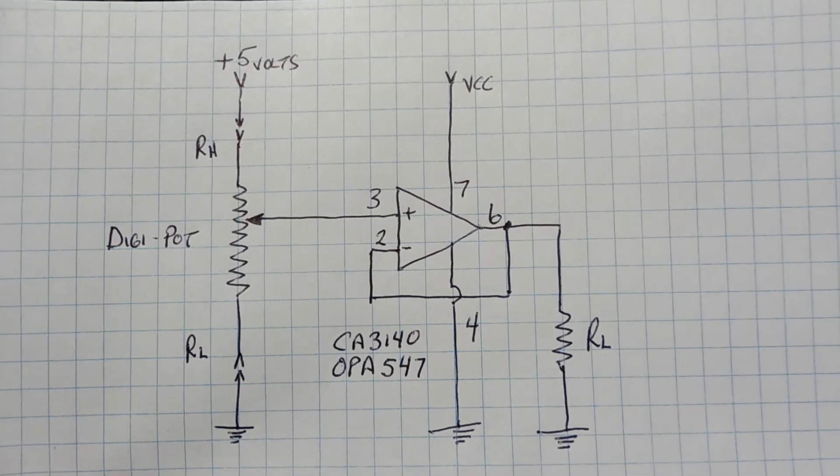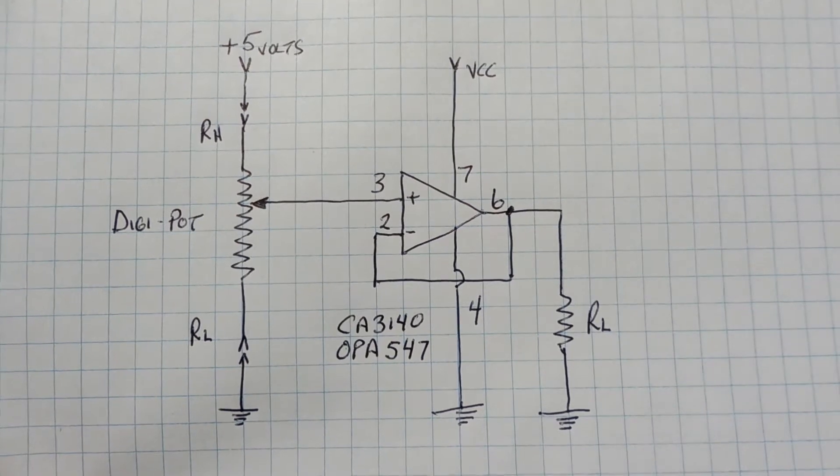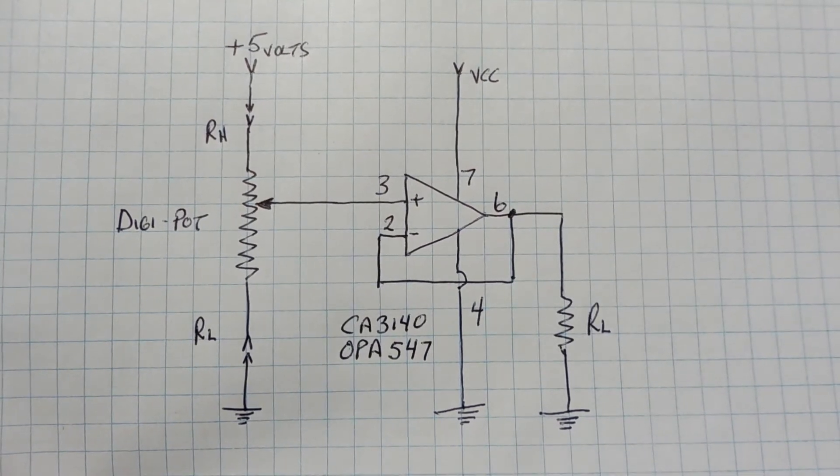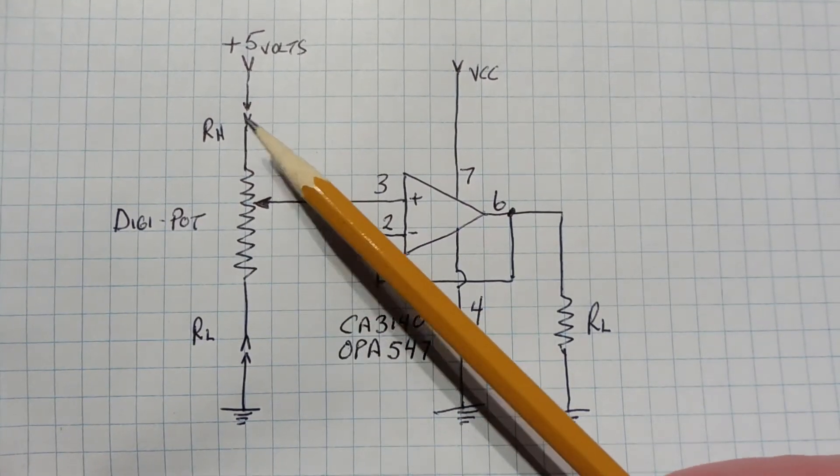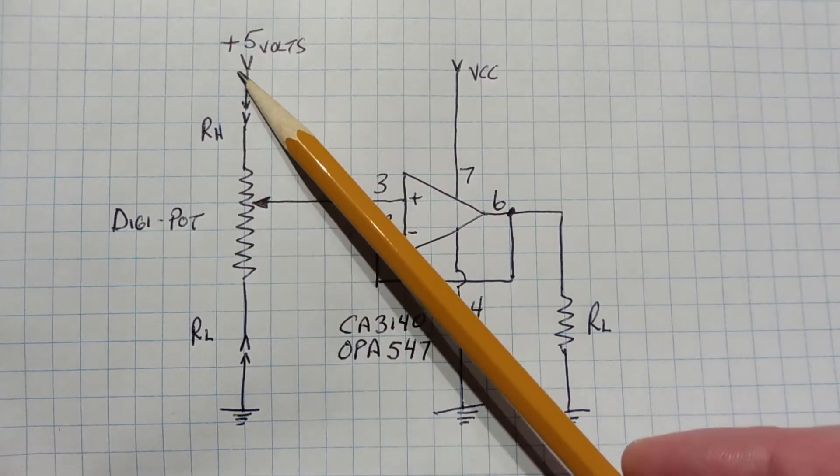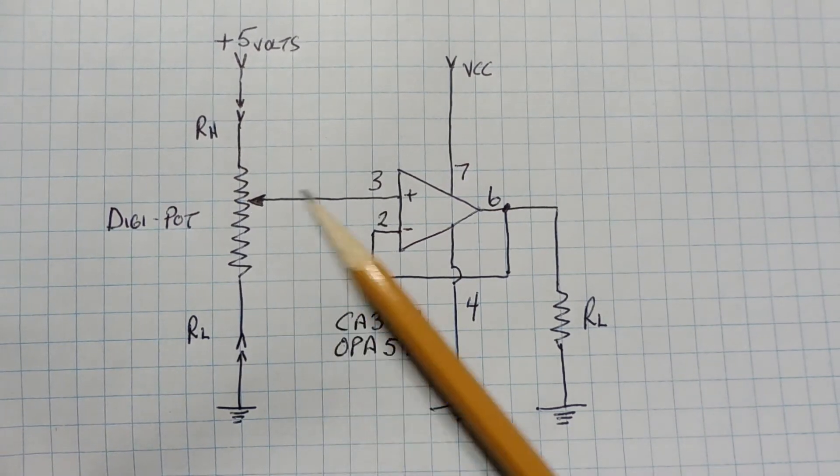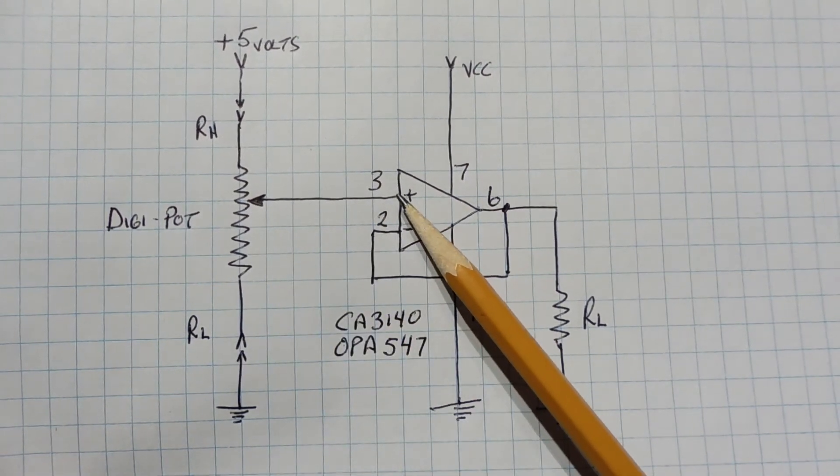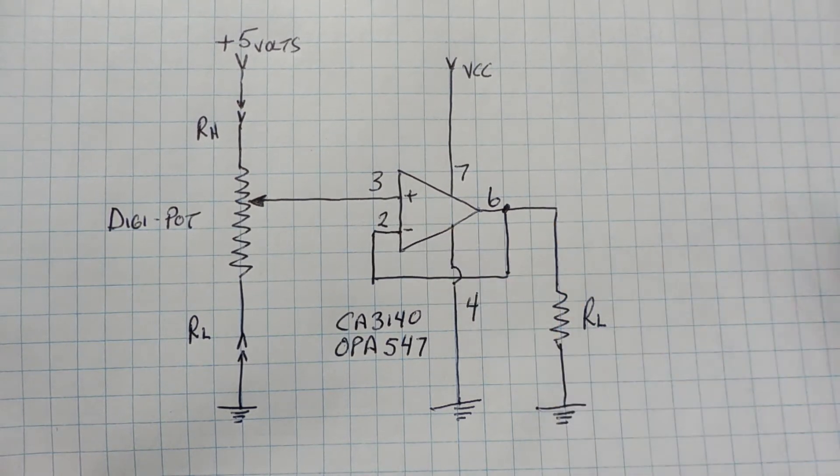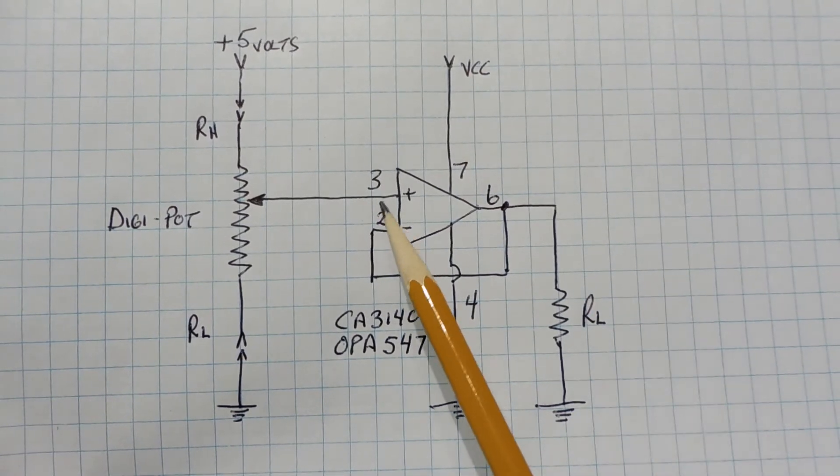Here's the schematic diagram of my buffer circuit to buffer the output of my DigiPot. If you look at the left, you can see my DigiPot. You can see the resistor high terminal, the resistor low terminal, and a resistor string. And I have 5 volts across the resistor string. Now the wiper of the DigiPot is connected to pin 3 of this op amp, the non-inverting input. This op amp is a CA3140. It's a CMOS op amp, so it has a very high input impedance.